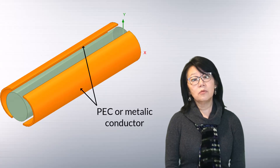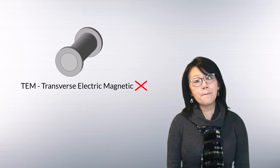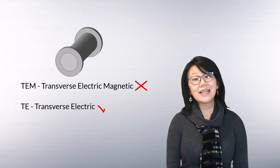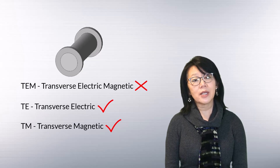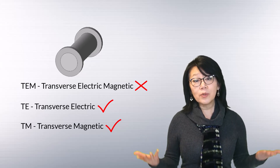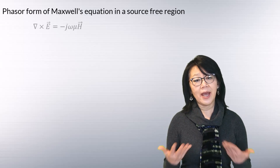The outside walls of the circular waveguide can be a PEC — perfect electric conductor — or some metal or conductor. Like the rectangular waveguide, the circular waveguide is made up of a single conductor, so no TEM mode exists; only TE (transverse electric) and TM (transverse magnetic) modes. To derive these, we start with Maxwell's equations for a source-free region in phasor format.